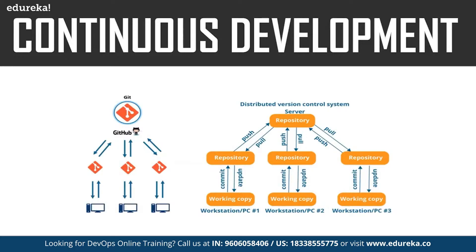Now let us have a look at the version control tool Git. Git is a distributed version control tool that supports distributed non-linear workflows by providing data assurance for developing quality software. When developing a large project with many collaborators, it is very important to have communication while making changes. Imagine a team of 10 developers — if a developer commits a change into the code and that change causes an error, how will you track which developer made what change and how to solve that error? Tools like Git solve these code maintenance problems.